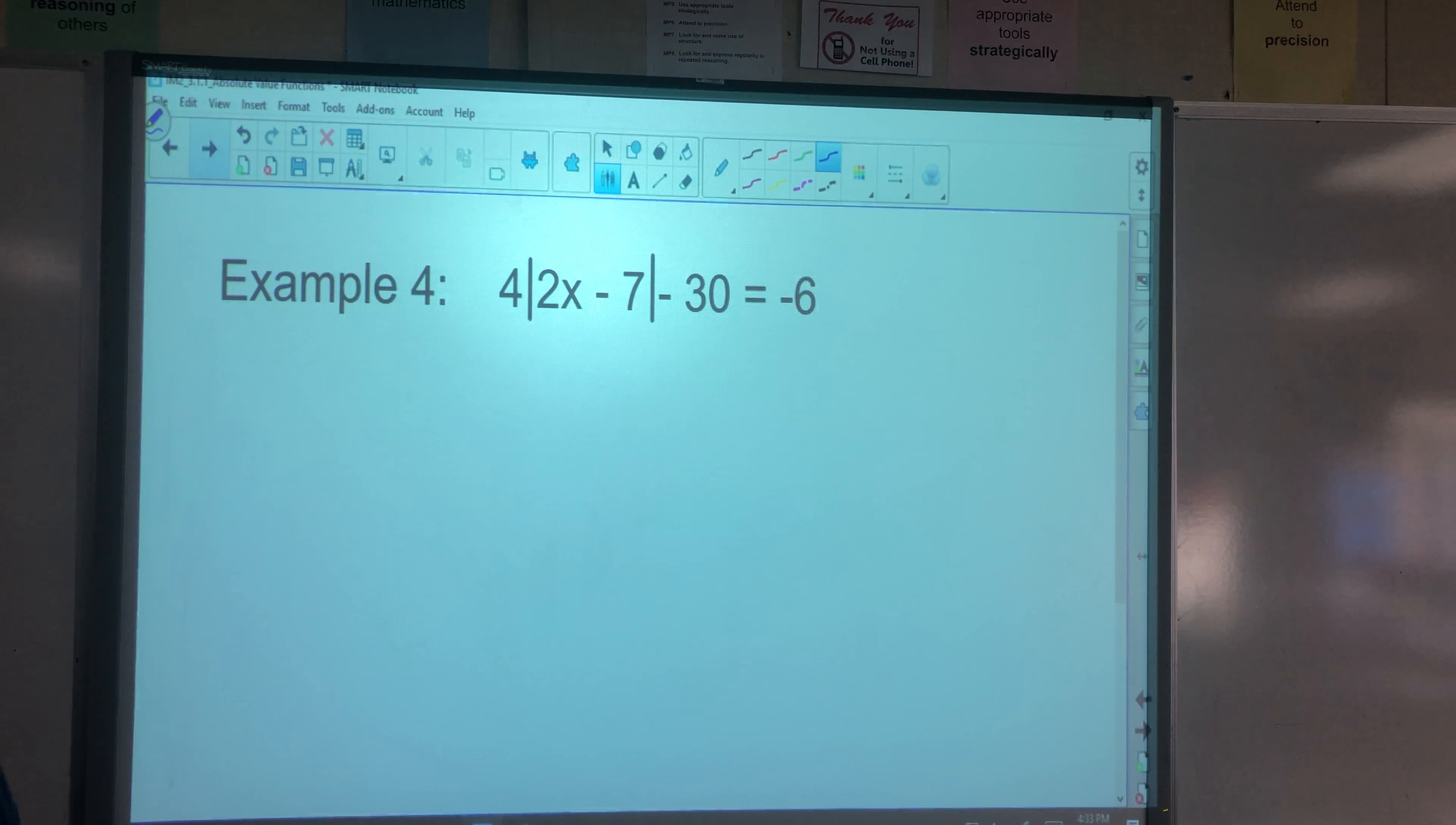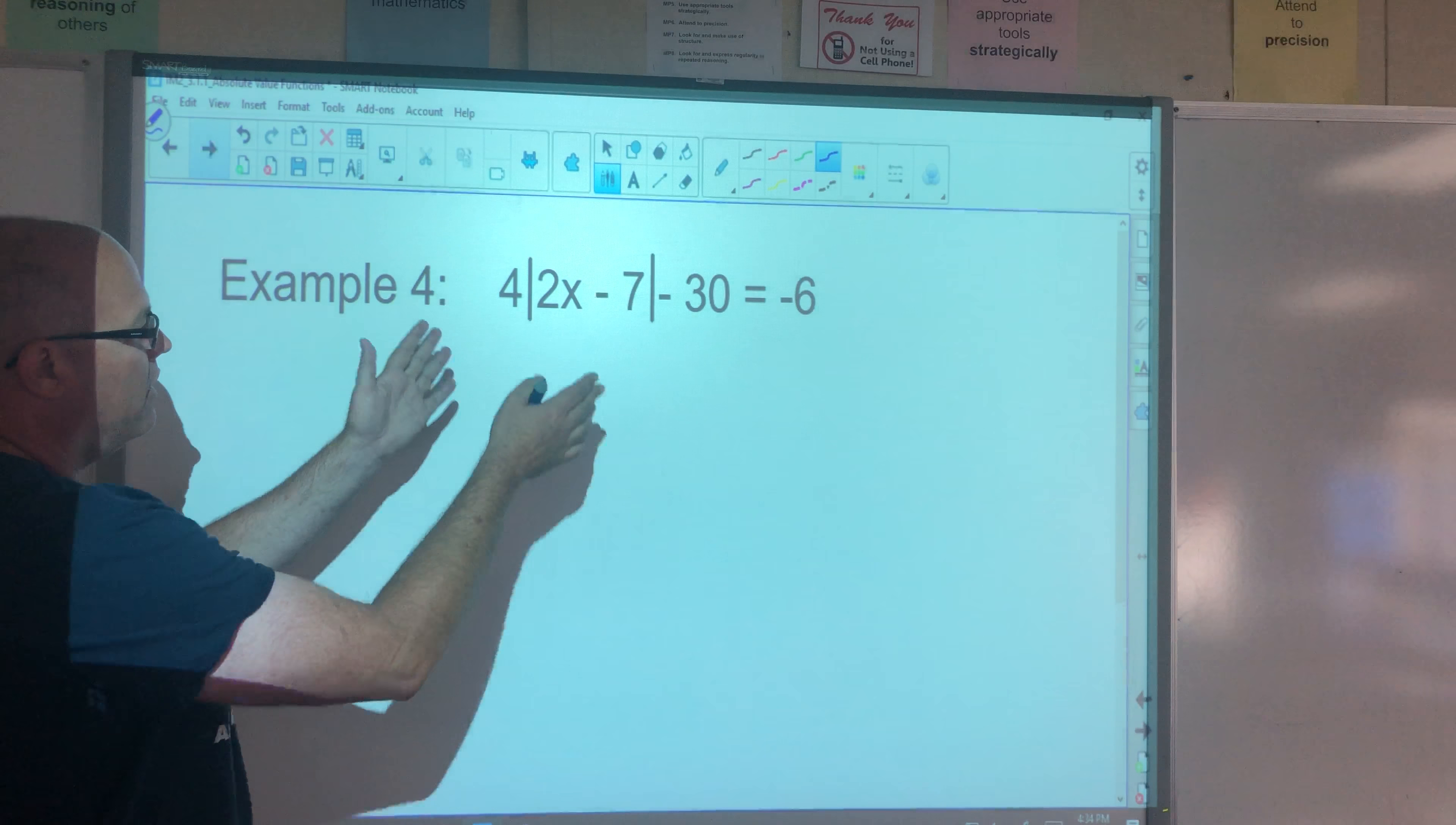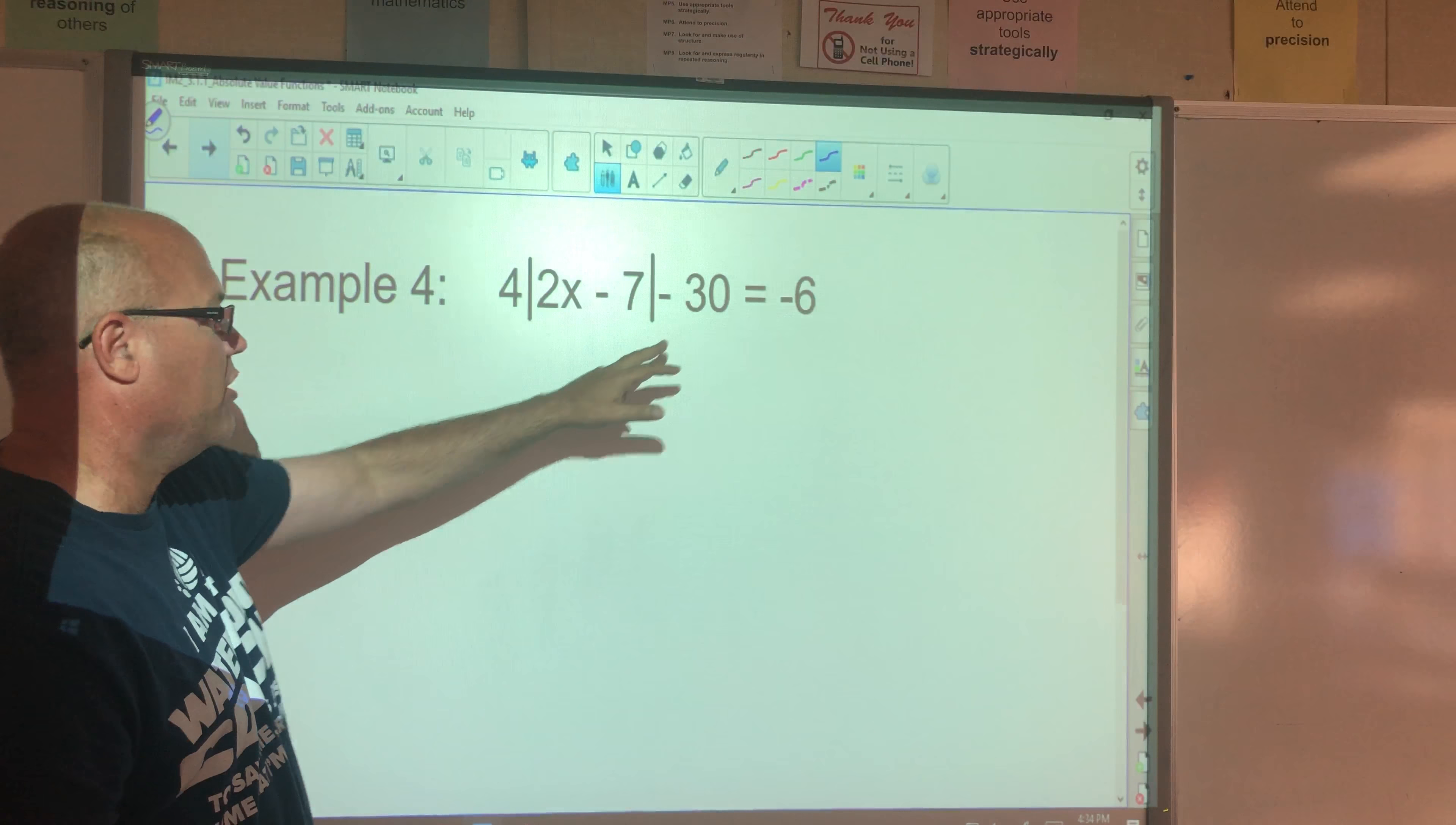And then finally, a little more complicated one is where we have to do some work to isolate the absolute value bars. So your first step is you need to follow your rules of algebra to isolate the absolute value bars by themselves. So the first thing we're going to do here is let's move this 30. It's negative 30. So how do you move it?